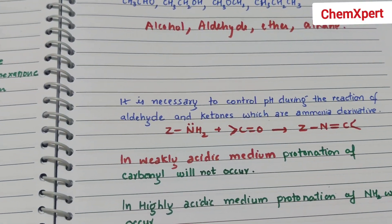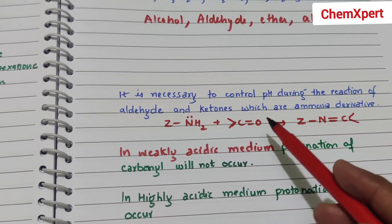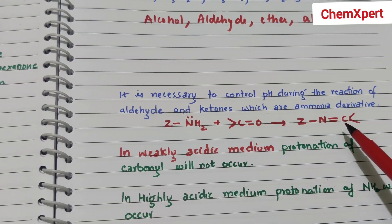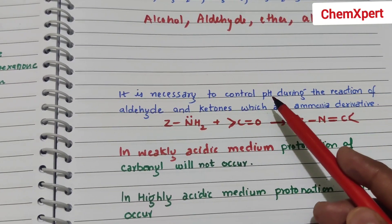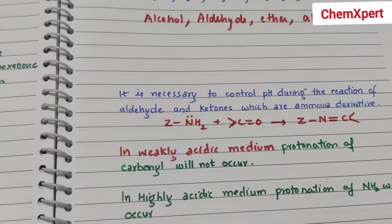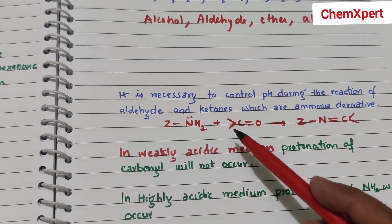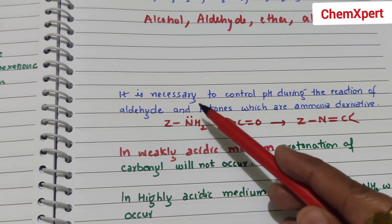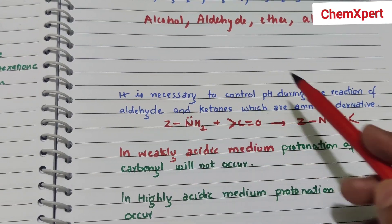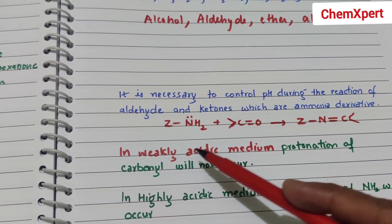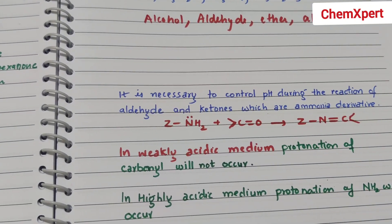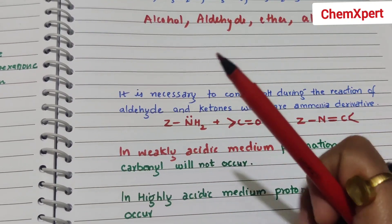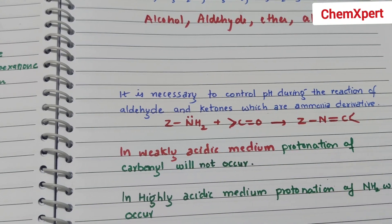The last question: why is it necessary to control the pH during the reaction of aldehyde and ketone with ammonia derivatives (NH2Z)? If the medium is weakly acidic, protonation of the carbonyl will not occur properly. In highly acidic medium, NH2 will be protonated and will not act as a nucleophile. That is why pH must be controlled. At low pH, protonation of carbonyl will not occur; at highly acidic pH, protonation of NH2 will occur. Practice all these reasoning questions as they are frequently asked in board exams.